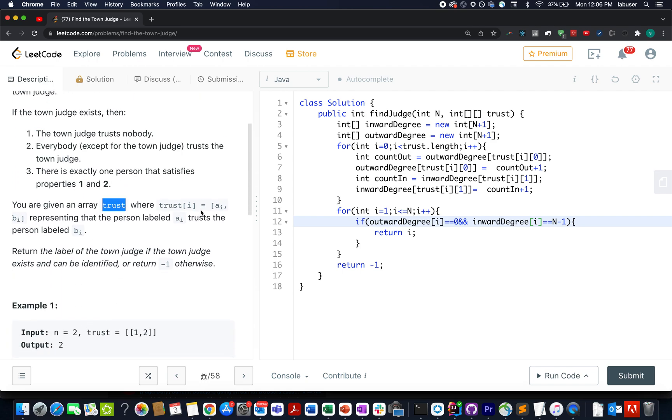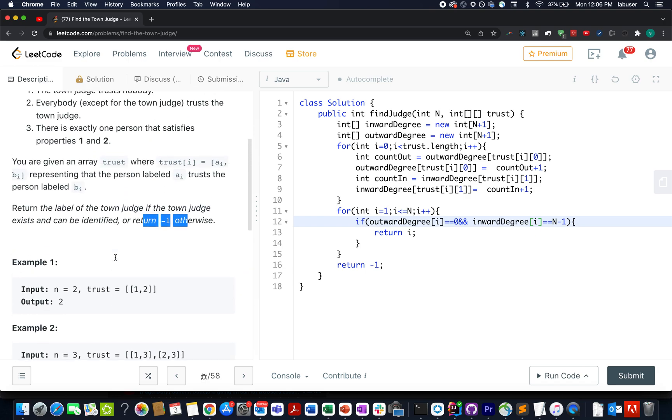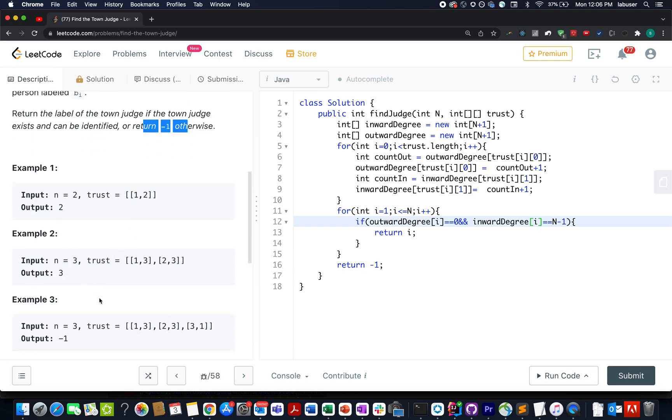We are given a trust array wherein each element of the trust array has two attributes, the identifier for first person, the identifier for the second person AI and BI. And it simply represents that the AI person trusts the person labeled with BI index. In case there is no town judge, then we have to return minus one. Otherwise, we have to return the identifier ID of the town judge. Without much ado, let's quickly walk through the presentation.